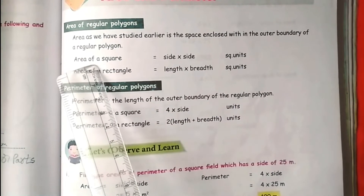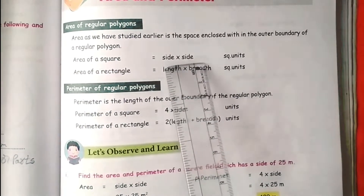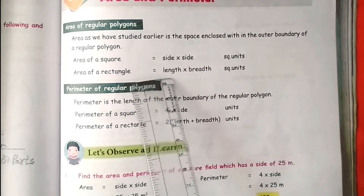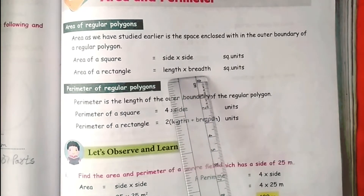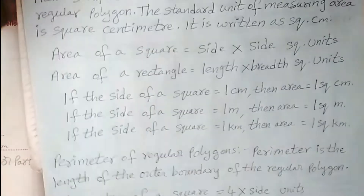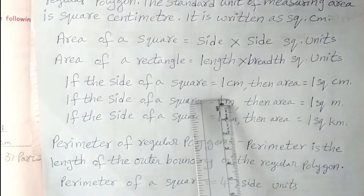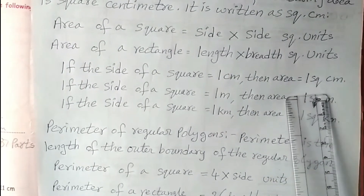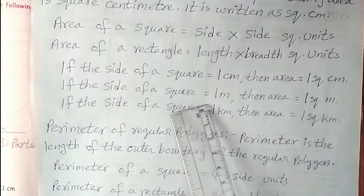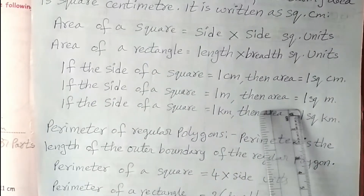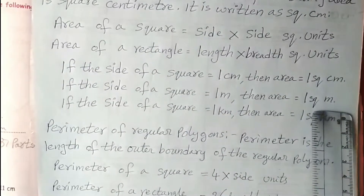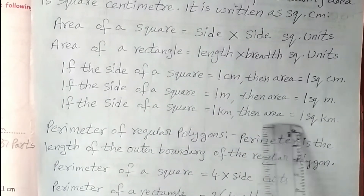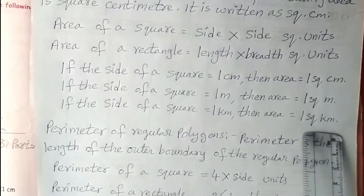Area of a square is equal to side into side square units. Area of a rectangle is equal to length into breadth square units. If the side of a square equals 1 centimetre, then area equals 1 square centimetre. If the side equals 1 metre, the area is 1 square metre. If the side equals 1 kilometre, the area is 1 square kilometre.